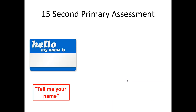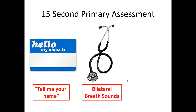As you approach the patient, you're looking for any exsanguinating hemorrhage to control, but this is a quick 15-second primary assessment that tells you how sick the patient is. The minute you walk up, try to make eye contact. If you can talk to them, say 'tell me your name.' If they're able to answer, that immediately tells you their GCS is probably 15 and their airway is intact. That one question gives you a pretty comprehensive assessment of mental status and airway status.